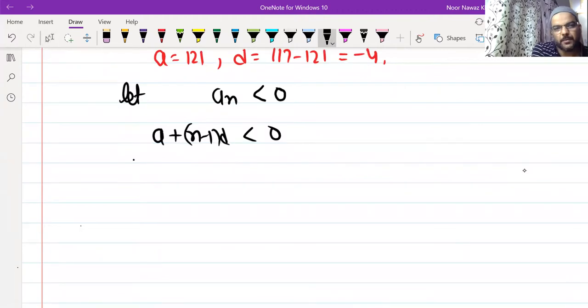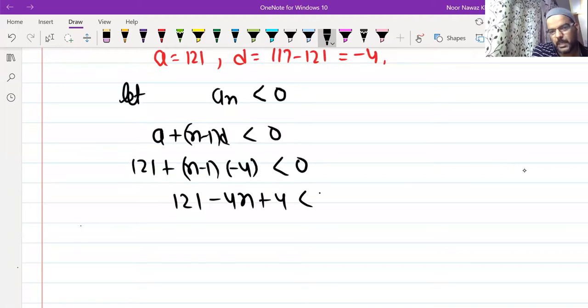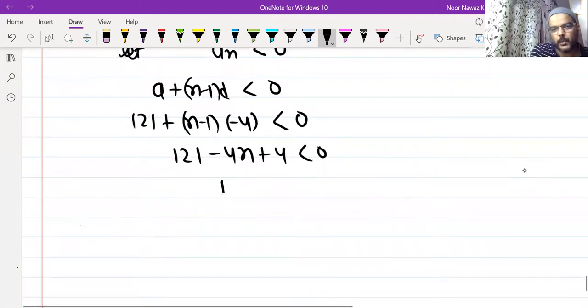a is 121, n we don't know, d is minus 4, is less than zero. 121 minus 4n plus 4 less than zero. 125 minus 4n less than zero.